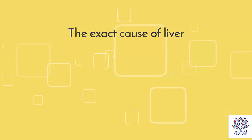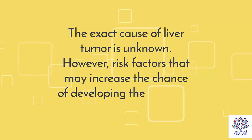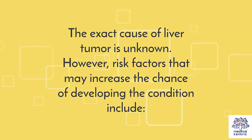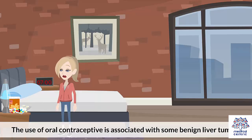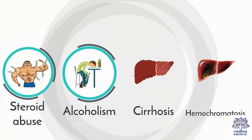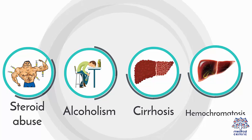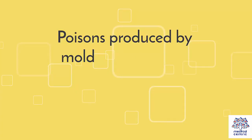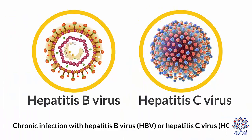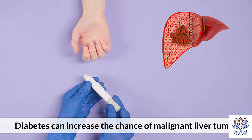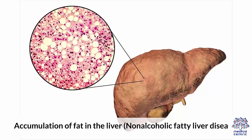The exact cause of liver tumor is unknown. However, risk factors that may increase the chance of developing the condition include exposure to toxic chemicals such as arsenic, use of oral contraceptives associated with some benign liver tumors, steroid abuse, alcoholism, cirrhosis, hemochromatosis, poisons produced by molds that grow on improperly stored peanuts and grains — or aflatoxins — chronic infection with hepatitis B virus or hepatitis C virus, certain inherited liver diseases, diabetes, and accumulation of fat in the liver, or non-alcoholic fatty liver disease.